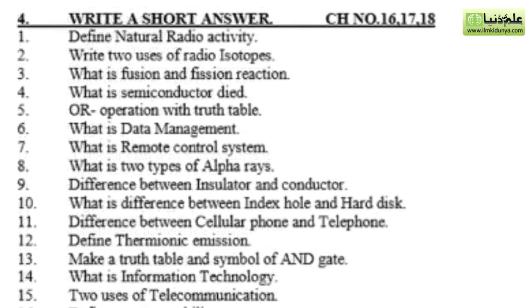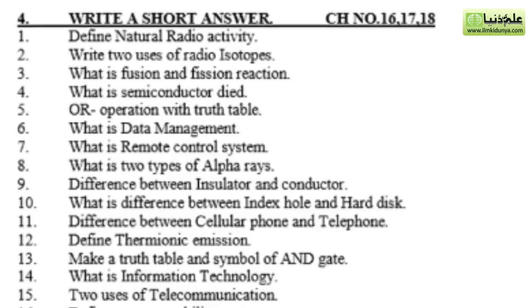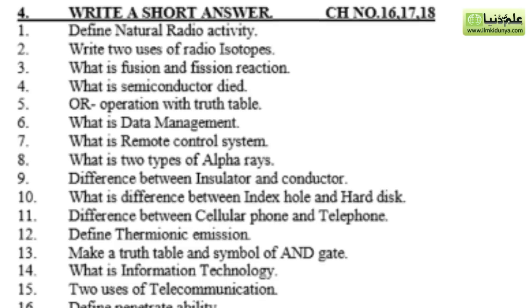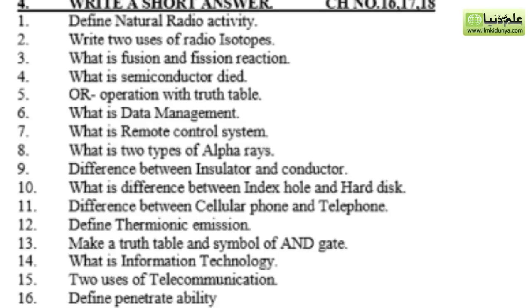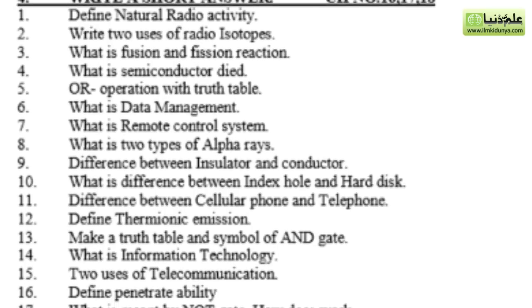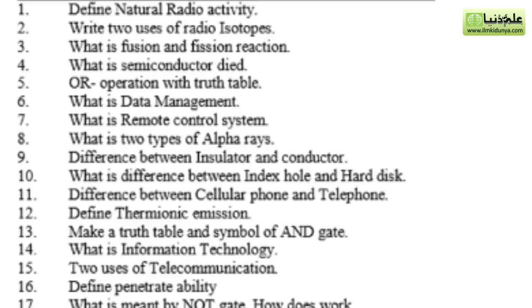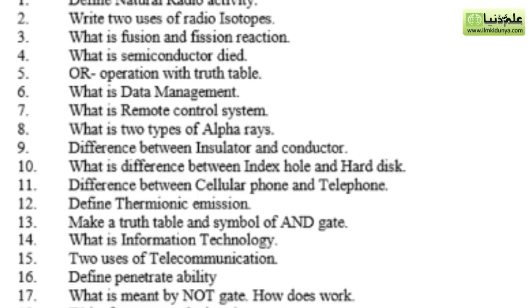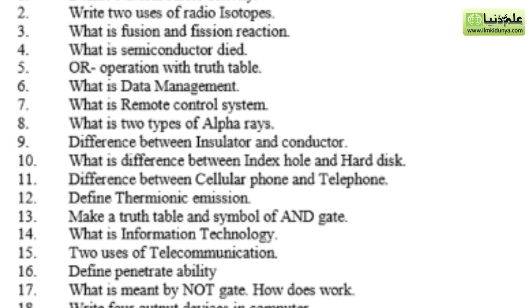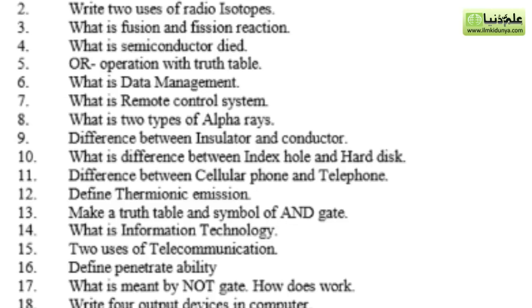Now question number 4, chapter 16, 17, and 18 scheme according. So first you have defined natural radioactivity. Second, write two uses of radio isotopes. Third, what is fusion and fission reaction? What is semiconductor diode? OR operation with truth table. What is data management? What is remote control system?